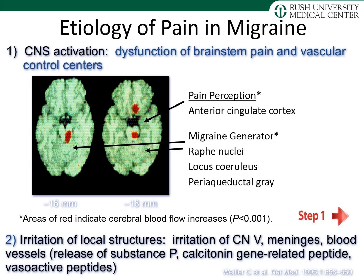The etiology of pain in migraine involves activation in the central nervous system and possible dysfunction of brainstem pain and vascular control centers. Pain perception is localized to the anterior cingulate cortex, and the migraine pain generator appears to be a combination of input from the raphe nucleus, locus coeruleus, and periaqueductal gray. Irritation of cranial nerve 5, the meninges, and blood vessels leads to release of substance P, calcitonin gene-related peptide, and vasoactive peptides.